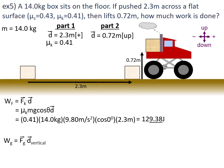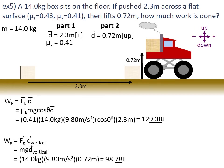In part two, there was work done against gravity. Work against gravity equals F_g·d, and F_g equals mass times gravity, so we substitute that in. We know the mass, gravity, and the vertical displacement: 14.0 kilograms × 9.80 metres per second squared × 0.72 metres. The work that went into gravity is 98.78 joules.